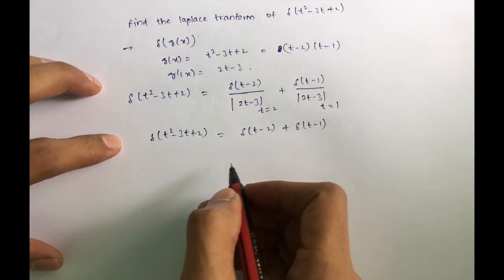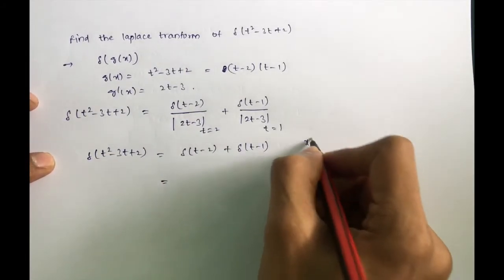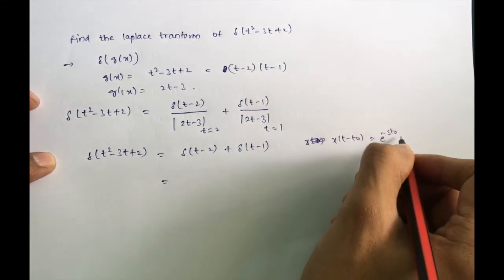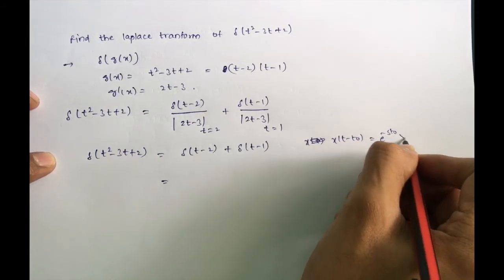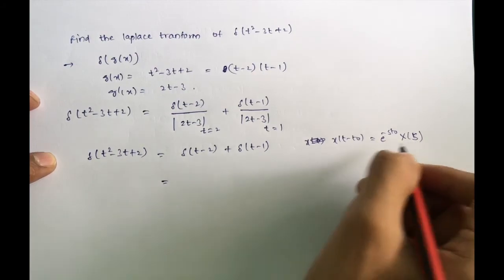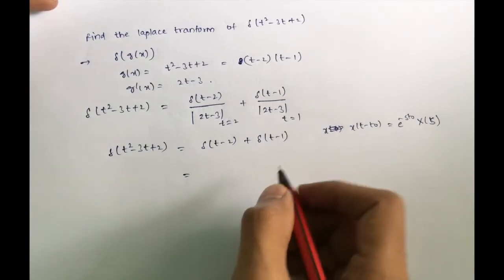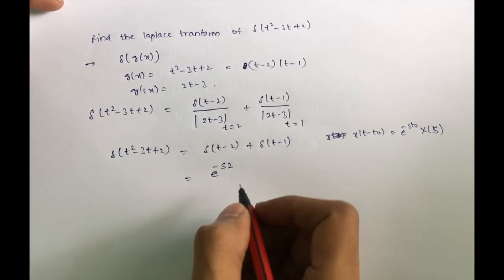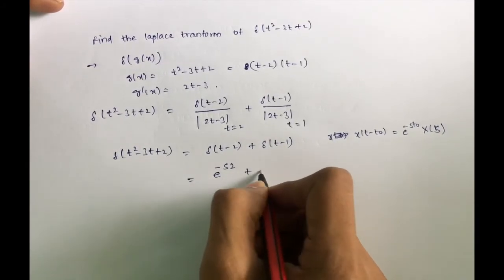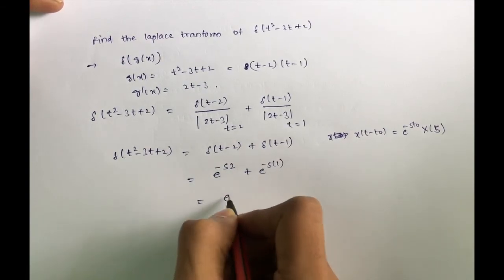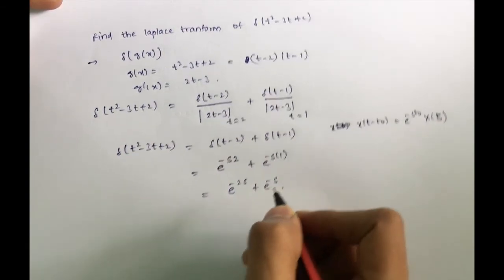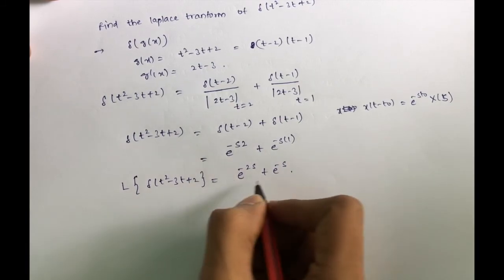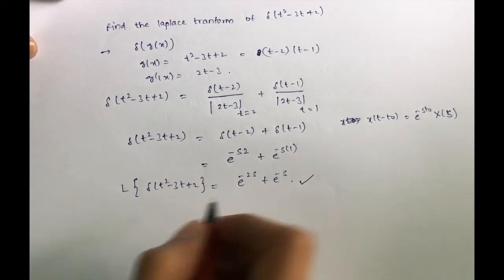Now we find the Laplace transform. The Laplace transform property states: L{x(t - t₀)} = e^(-st₀) · X(s). Since the Laplace transform of δ(t) = 1, we get L{δ(t - 2)} = e^(-2s) · 1 and L{δ(t - 1)} = e^(-s) · 1. Therefore, the Laplace transform of δ(t² - 3t + 2) = e^(-2s) + e^(-s).